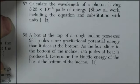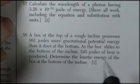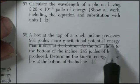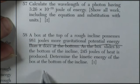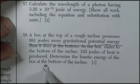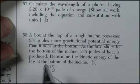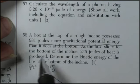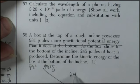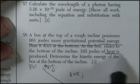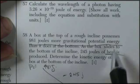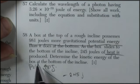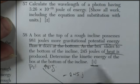Okay, question 58. A box at the top of a rough incline possesses 981 joules more gravitational potential energy than it does at the bottom. So it's the top here, 981 joules of potential energy. As the box slides to the bottom of the incline, 245 joules of heat. So I lose 245 joules to heat, friction. Determine the kinetic energy of the box at the bottom. And they just want a point for that.